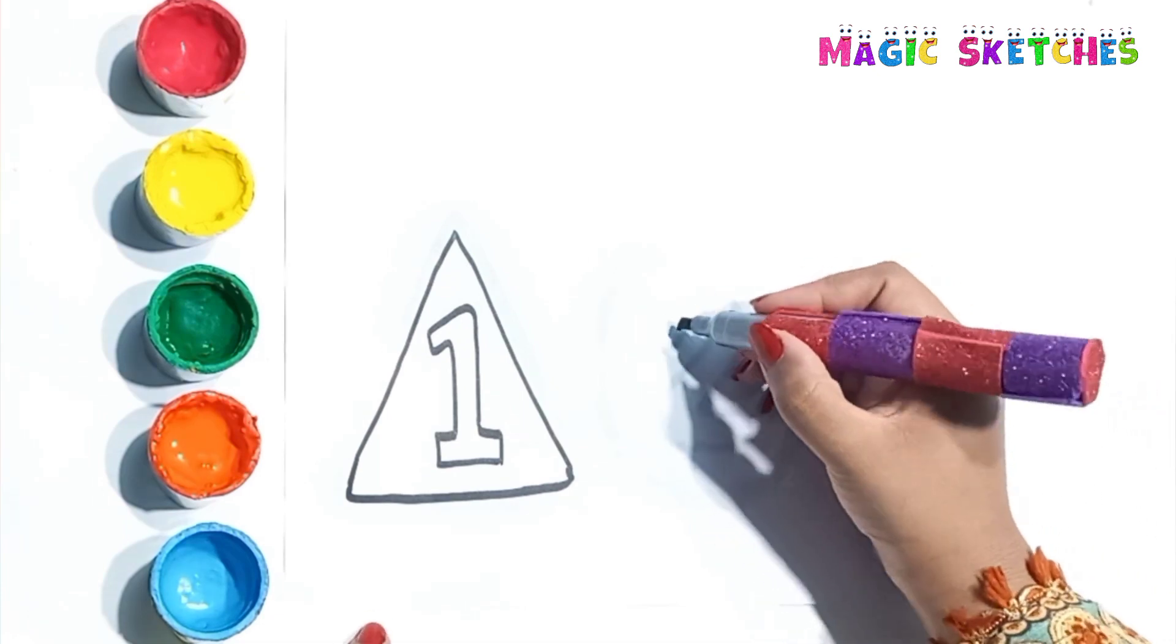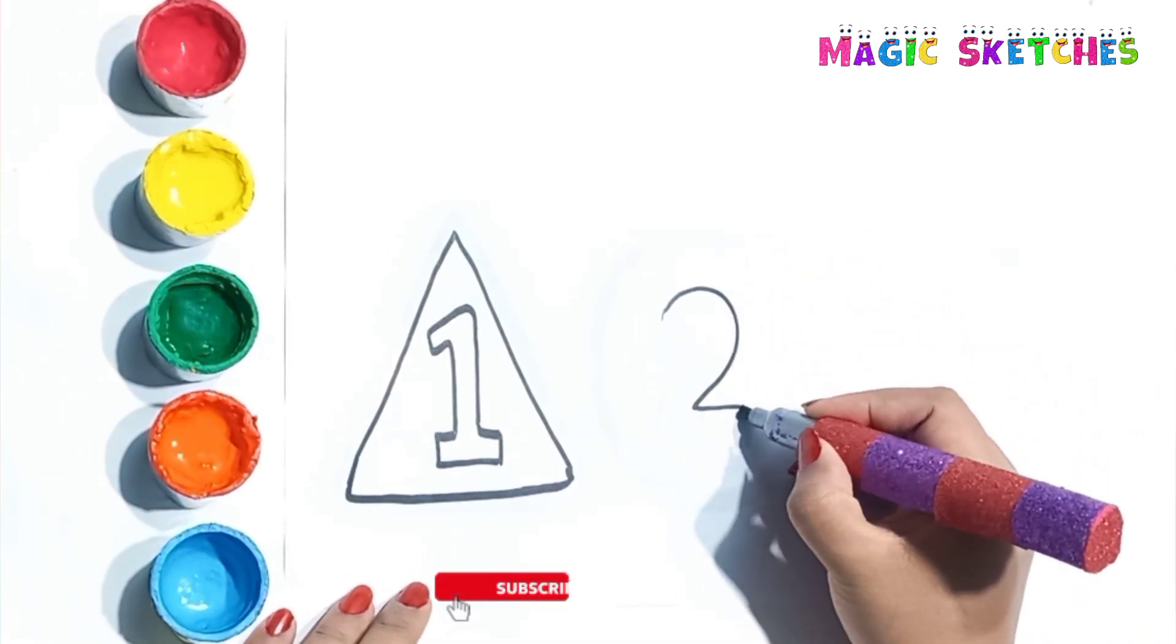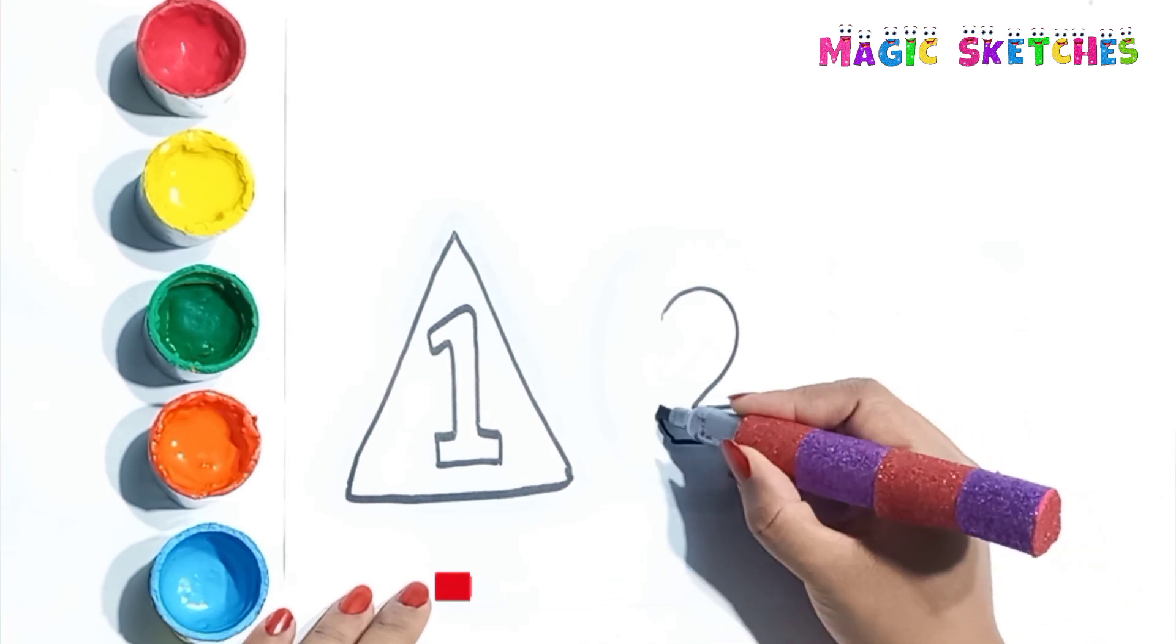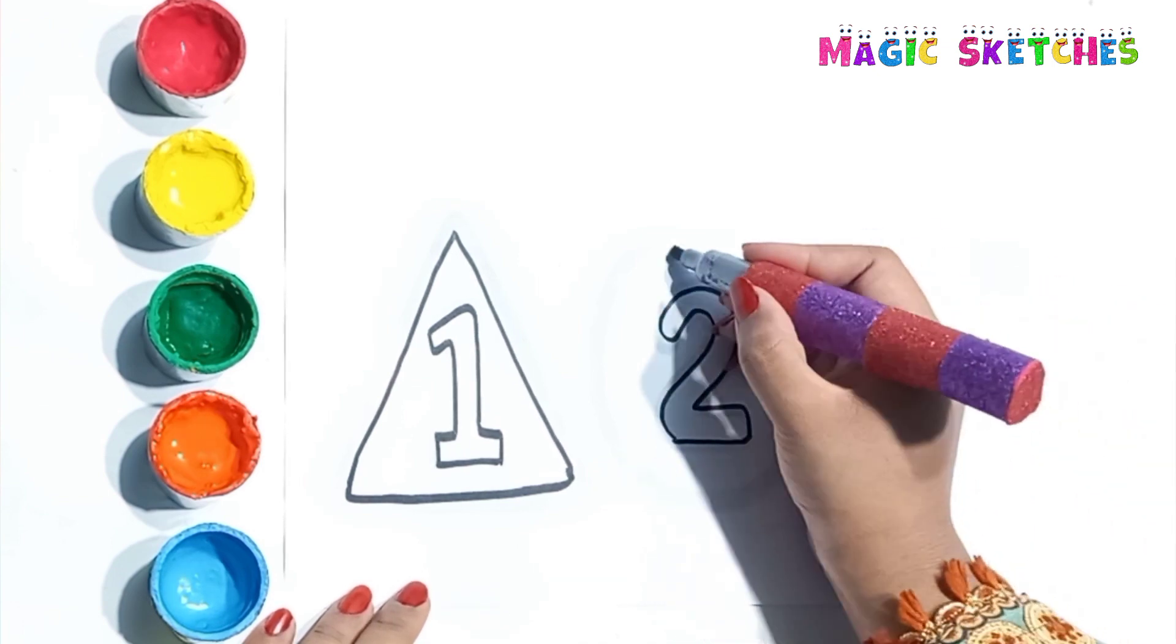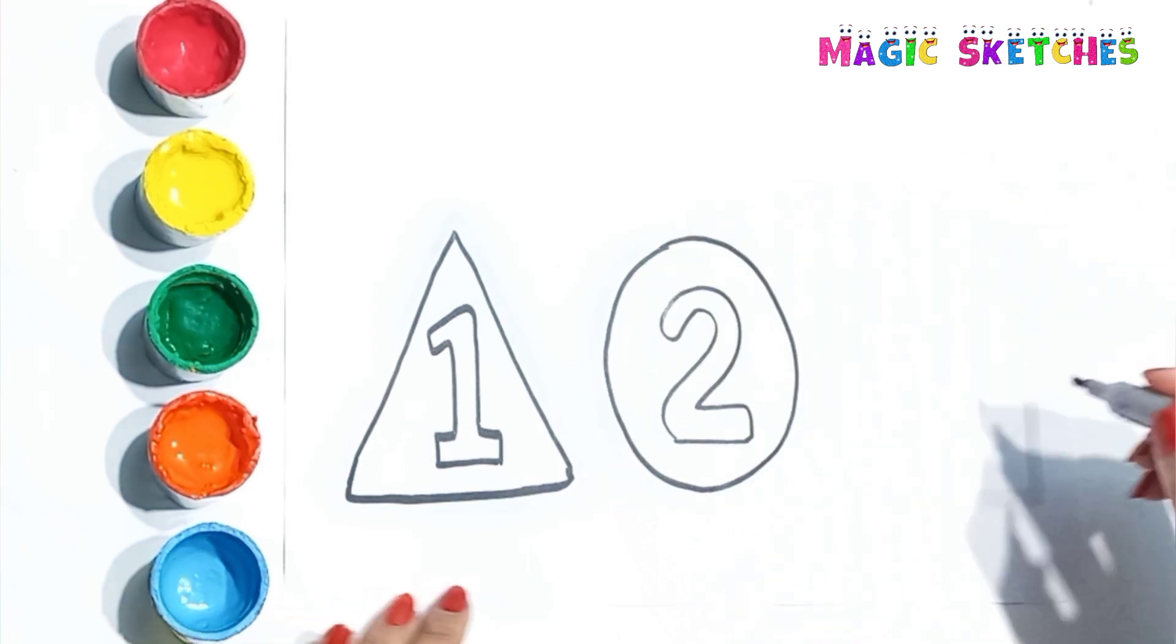Now I am drawing circle. Let's draw number 2 on it. It's a circle.